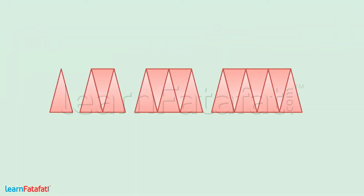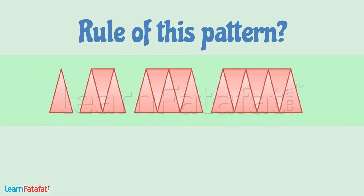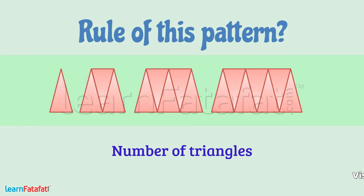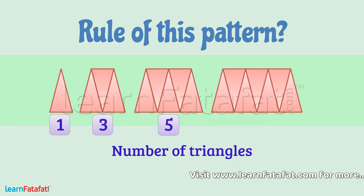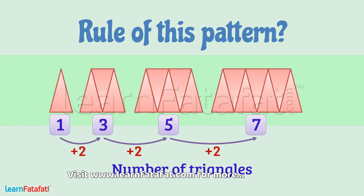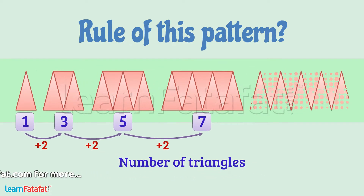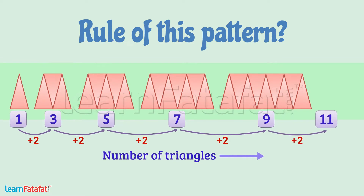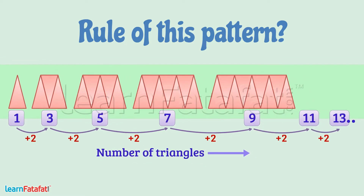Now, think about the rule of this pattern. We see that the number of triangles grows as one, three, five, seven — or it grows by two. So, the number of triangles in the next picture will be two more. So, we can continue the pattern as nine, eleven, thirteen and so on.